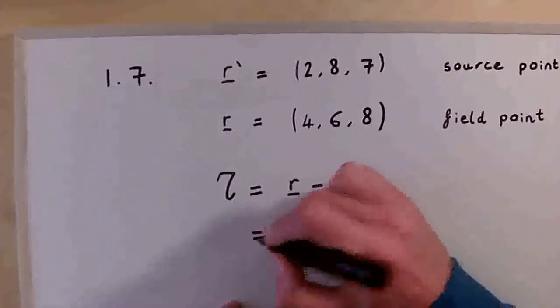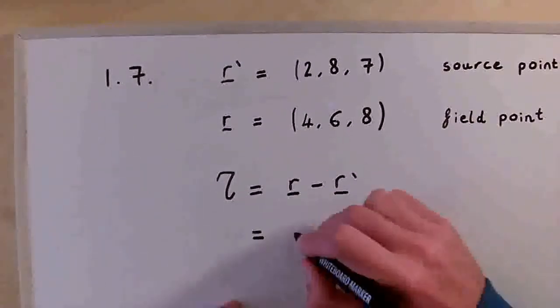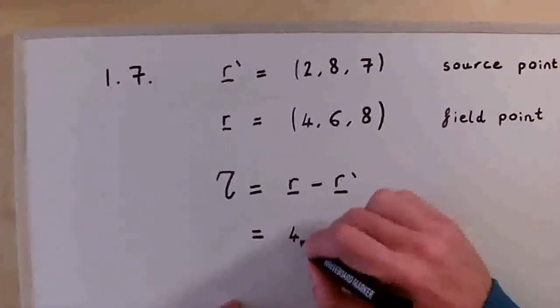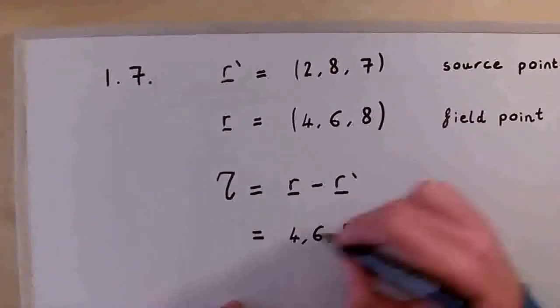So we can just write this out explicitly using both of them as vectors.